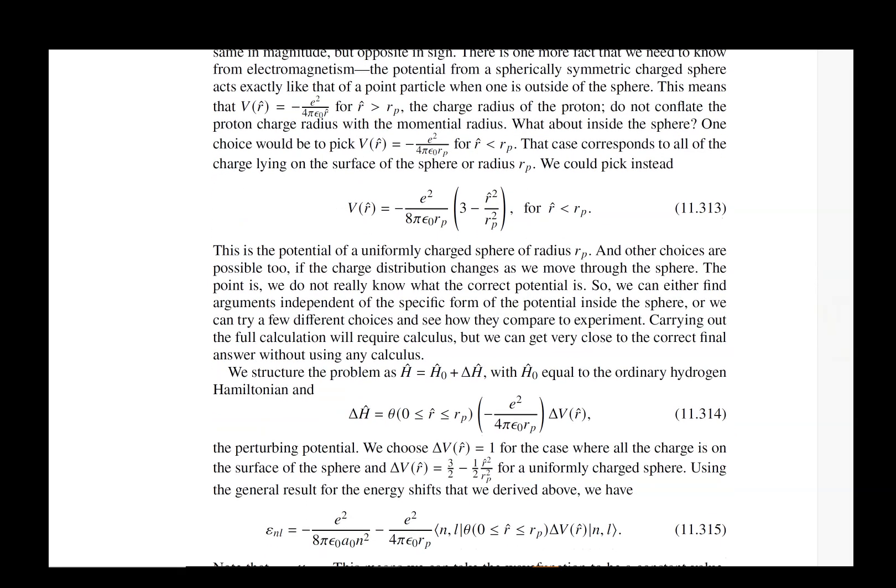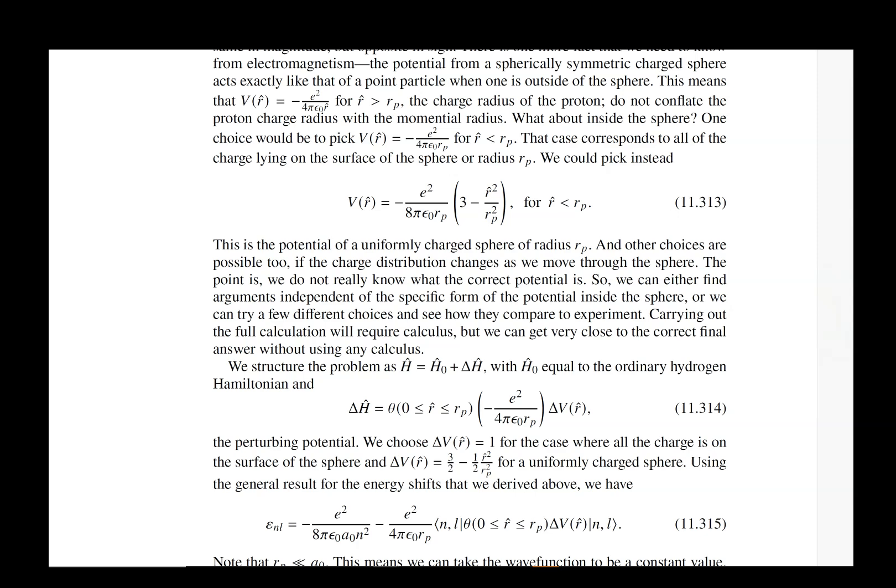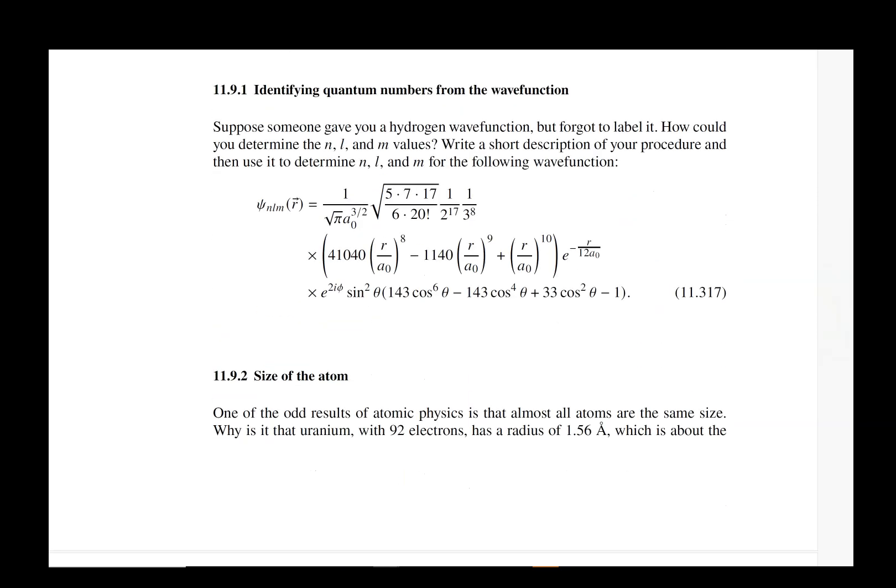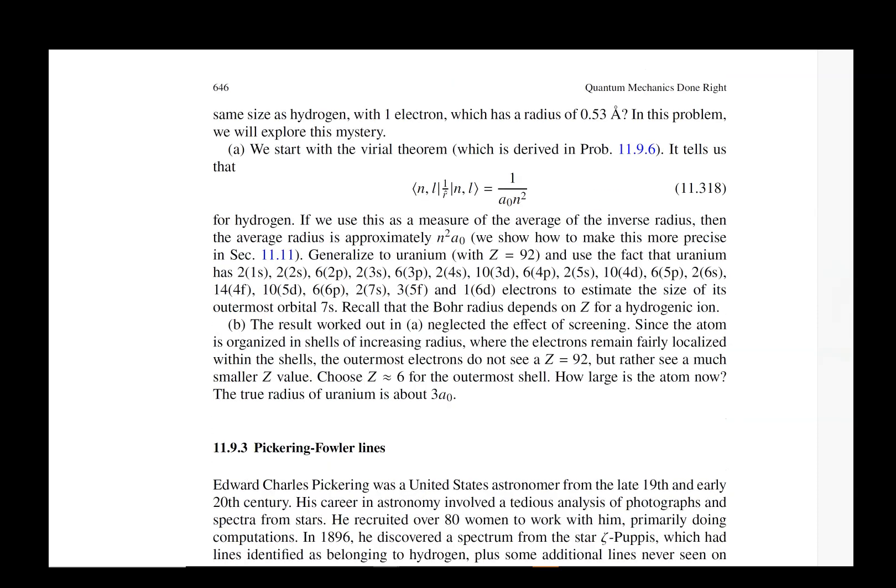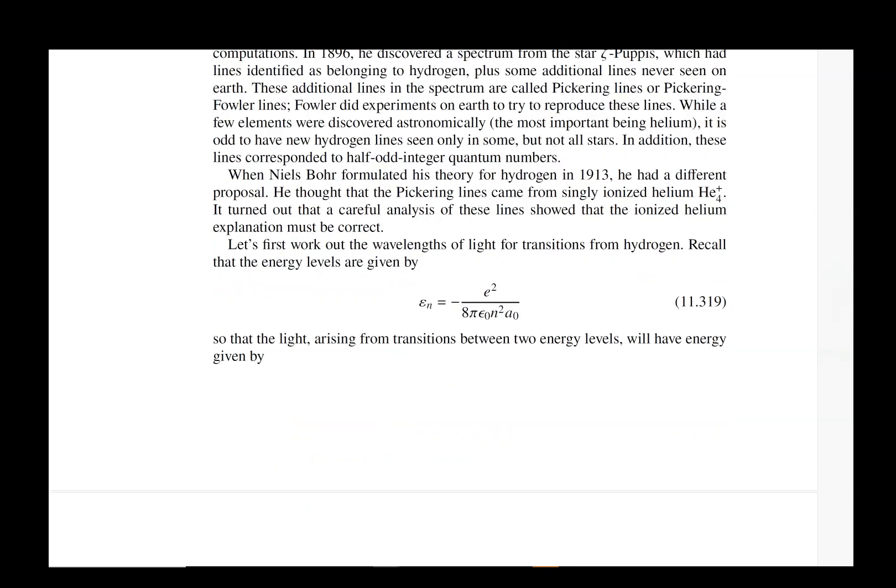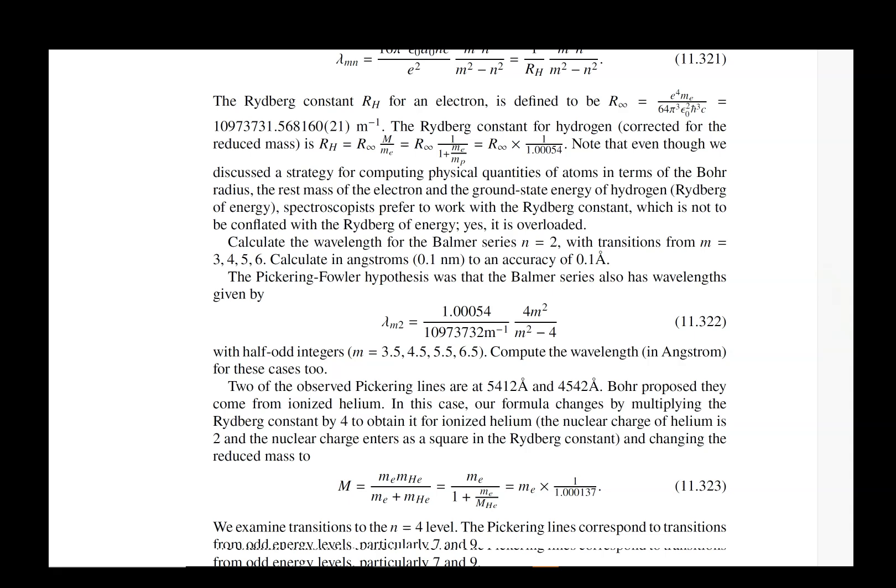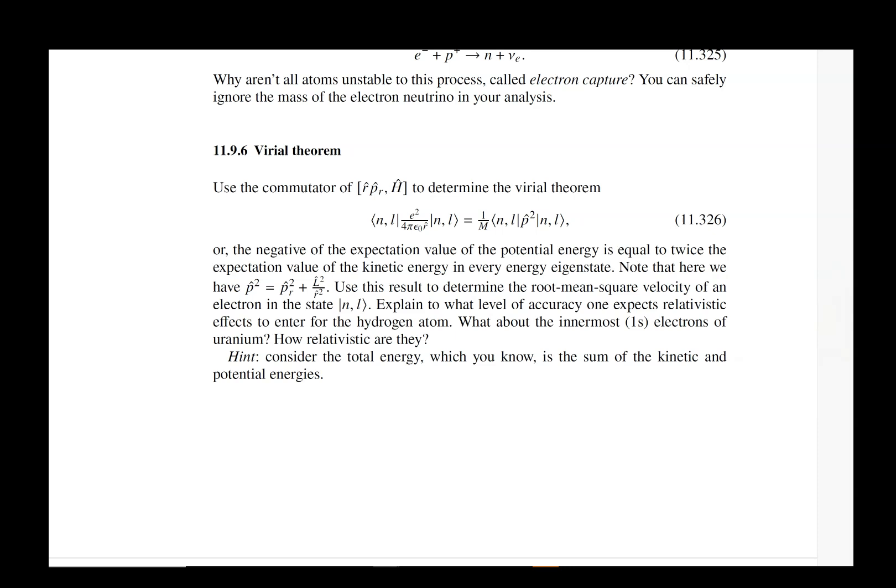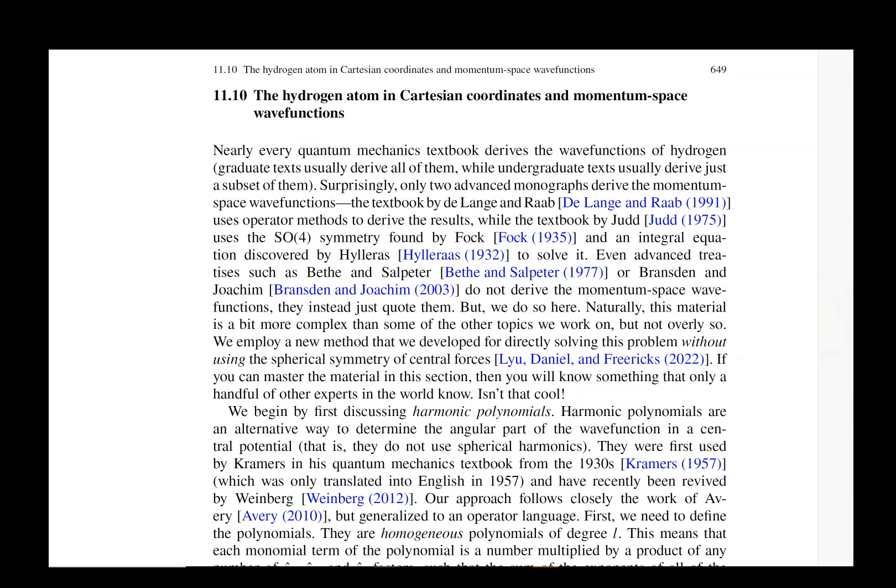Then we start looking at interesting questions like the proton charge radius problem. This is one that had been a puzzle, but that puzzle has now recently been solved. It's very interesting that you can find both the mass of the nucleus and its physical size by doing careful spectroscopy. It really amazes me that by cleverly thinking of how to do different experiments, you can do remarkable things.